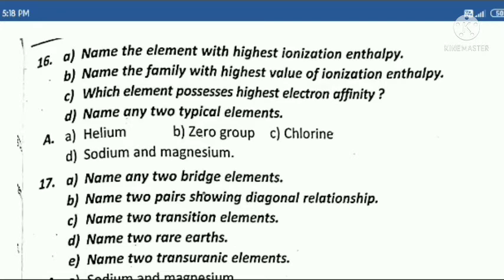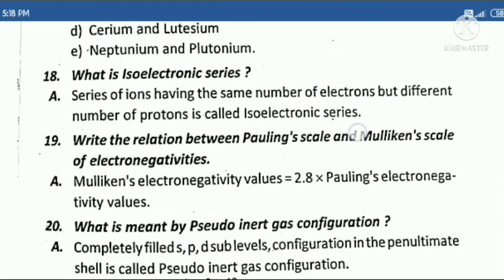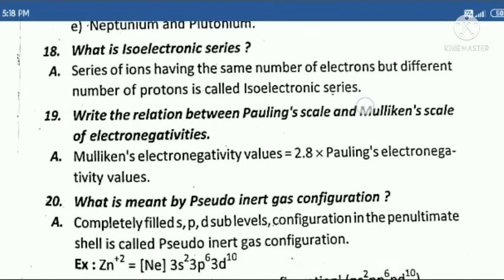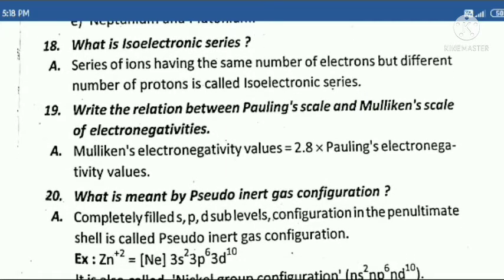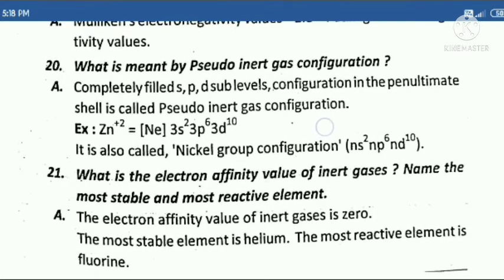Seventeenth question: A. Name any two bridge elements. So read everything with answers. The video may become lengthy so I am just minimizing the questions and not reading answers. Question 18: What is an isoelectronic series? Question 19: Write the relation between Pauling scale and Mulliken scale of electronegativities. Question 20: What is meant by pseudo-inert gas configuration?